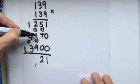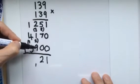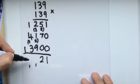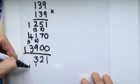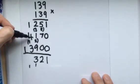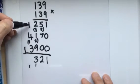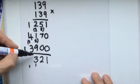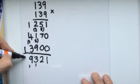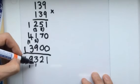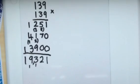200 plus 100 is 300 plus 900 is 1,200 plus 1 is 1,300 or 1,300 carrying the 1. And 4 plus 3 plus 1 is 8 plus the 1 is 9. And then we've got a 1 there. So, our answer is 19,321.